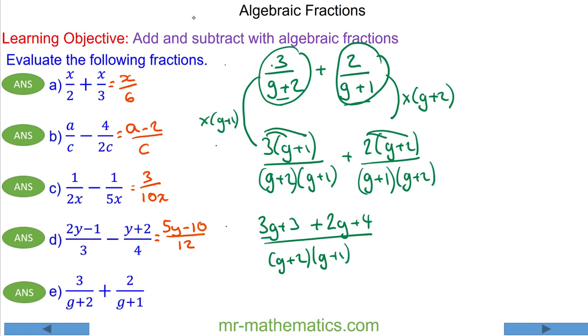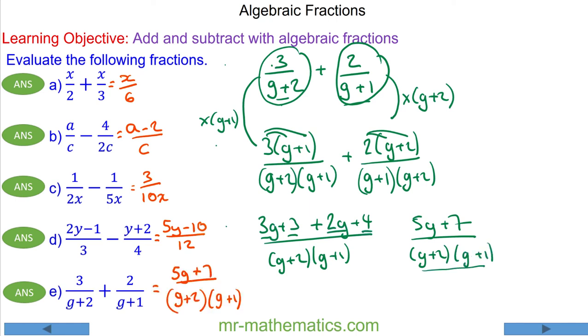Collecting like terms: 3g and 2g gives 5g, and 3 and 4 gives 7, all over (g plus 2) lots of (g plus 1). So the final answer is (5g plus 7) over (g plus 2)(g plus 1).